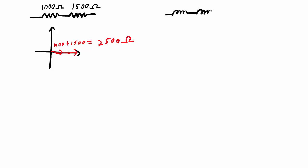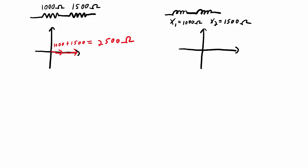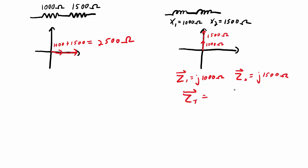If I have two inductors in series, and this one has a reactance of 1000 ohms and the second one has a reactance of 1500 ohms, looking at this on the real-imaginary plane, these are all going to be imaginary values. I can indicate they are in the imaginary direction by putting a J in front of them. So Z1 equals j1000 ohms and Z2 equals j1500 ohms. The total impedance then will be j1000 plus j1500, or j2500 ohms. So that's fairly straightforward so far.